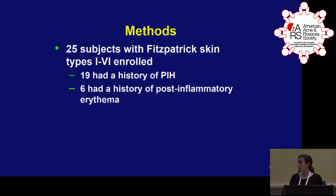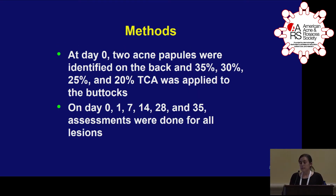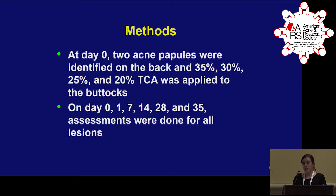In terms of the methods, we recruited 25 patients with Fitzpatrick skin types 1 through 6. Nineteen patients had a history of PIH and typically had Fitzpatrick skin types 4 through 6 and were melanocompetent. Six had a history of post-inflammatory erythema and had Fitzpatrick skin types 1 through 3. At day 0, we identified two acne papules on the back and applied 35%, 30%, 25%, and 20% TCA to the buttocks until we saw frosting at the higher 35% TCA concentration.